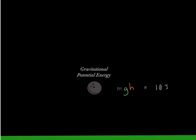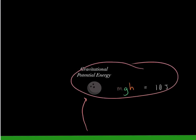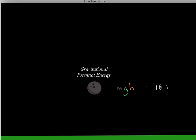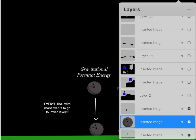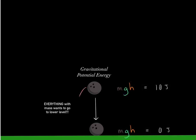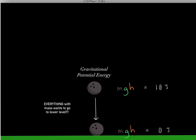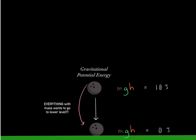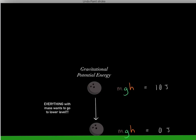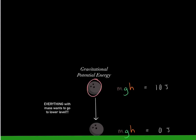So what happens if we lift this bowling ball up in the air? Well, we know it's going to gain energy in the form of gravitational potential energy. However, if we drop this ball, we know it's immediately going to want to fall to a lower level. Whenever an object falls to a lower level, it goes to a lower energy state — it has less gravitational potential energy. And that's true for any object that has mass.